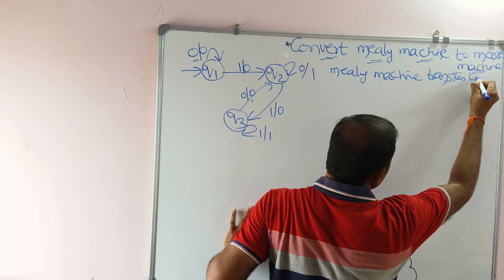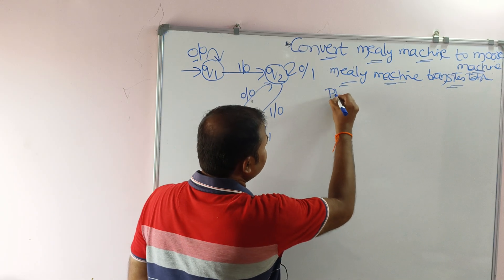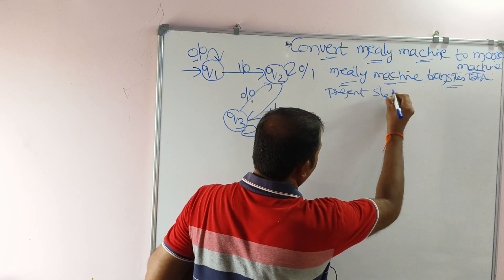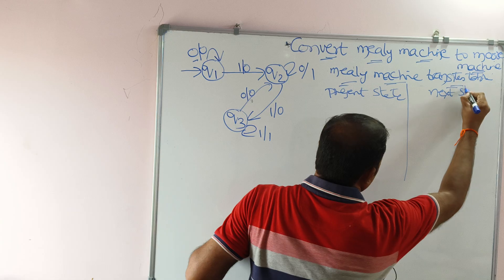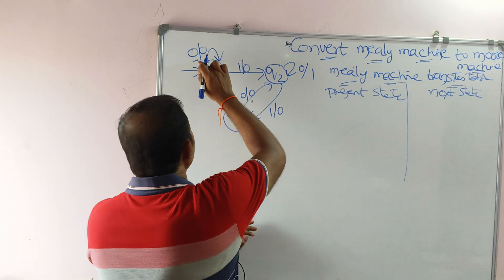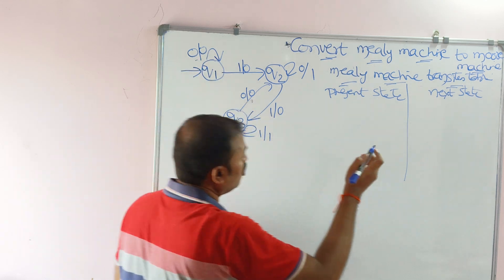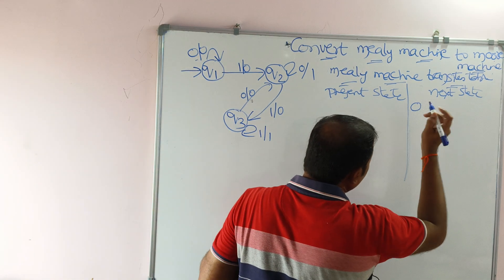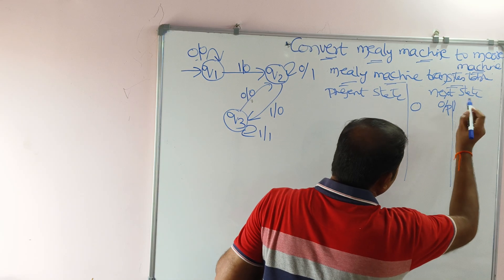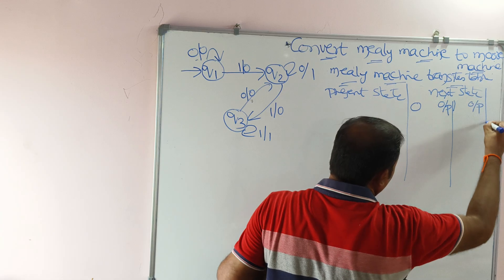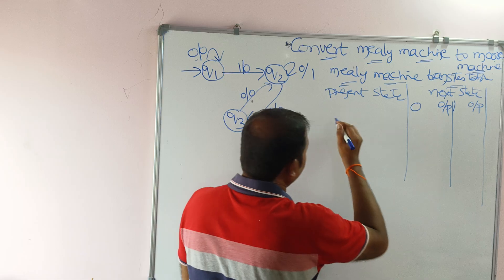Here we have two columns: the first column is present state, the second column is next state. In the next state, the first number is called the input and the second number is called the output. We have to write the next state on zero input and output, as well as the next state on one input and output. So we have two columns — present state and next state — and next state is split into two columns.